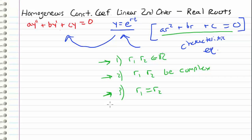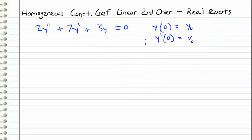So now we're going to take a look at a specific example and work through it completely. We have the differential equation 2y double prime plus 7 times y prime plus 3y is all equal to 0. The coefficients 2, 7, and 3 are all constants. It's homogeneous, second order, and we also have initial conditions: y(0) equals y0 and y'(0) equals v0.